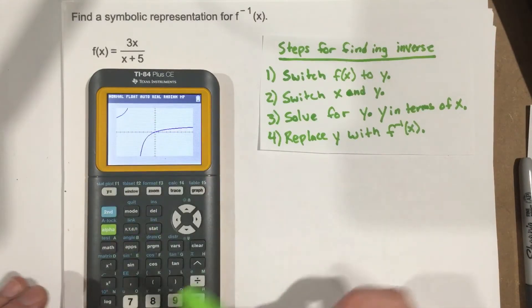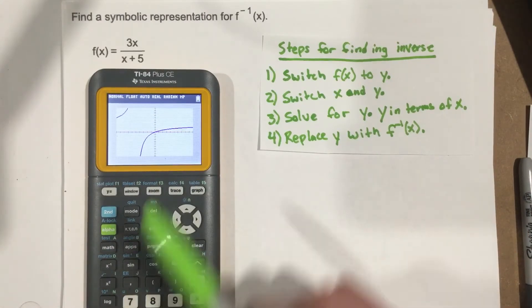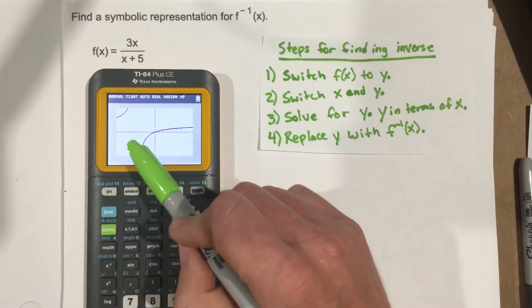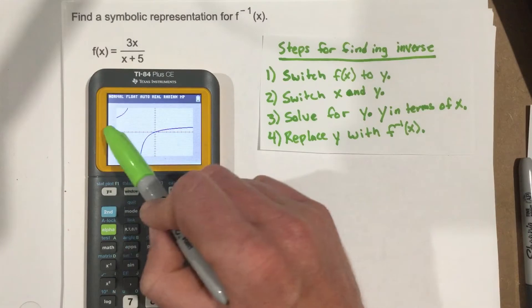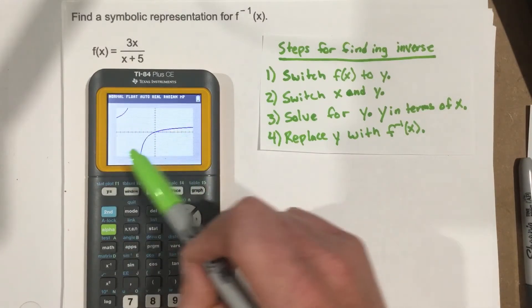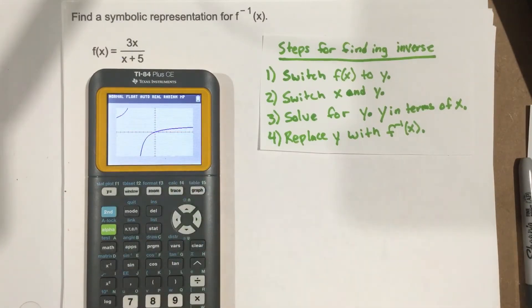And rational equation graphs typically are going to be one-to-one. In this case, we can see that this line and this line, there's a horizontal asymptote there. So if you draw horizontal lines, they actually never touch twice. They only touch the function once. So we're good.